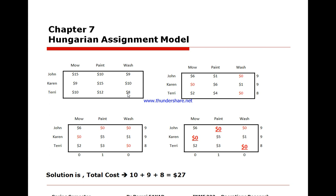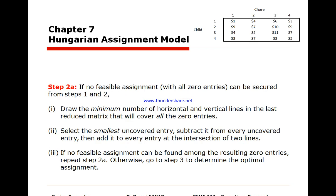If no feasible assignment with all zero entries can be secured after steps 1 and 2, we draw the minimal number of horizontal and vertical lines that cover all zero entries. We then select the smallest uncovered entry, subtract it from every uncovered entry, and add it to every entry at the intersection of the covering lines.